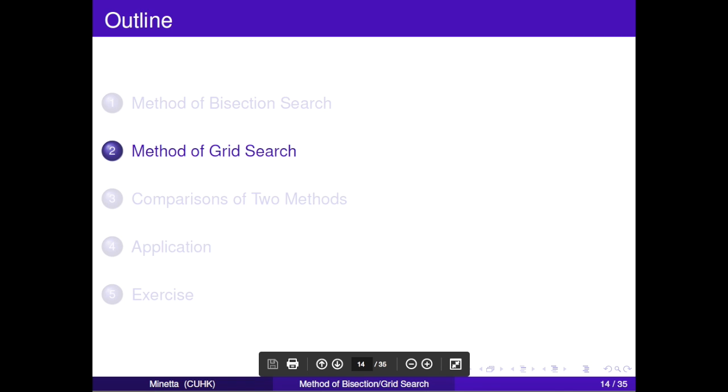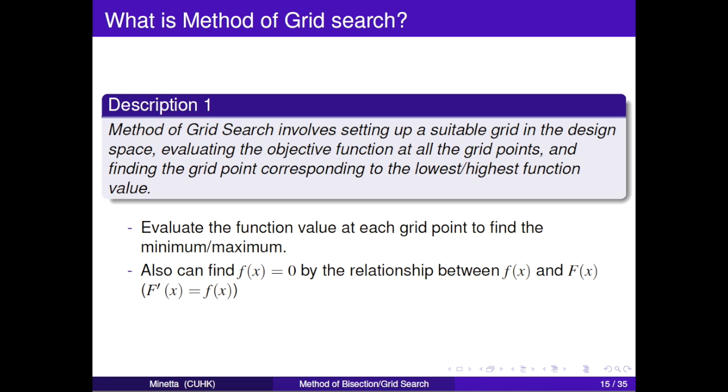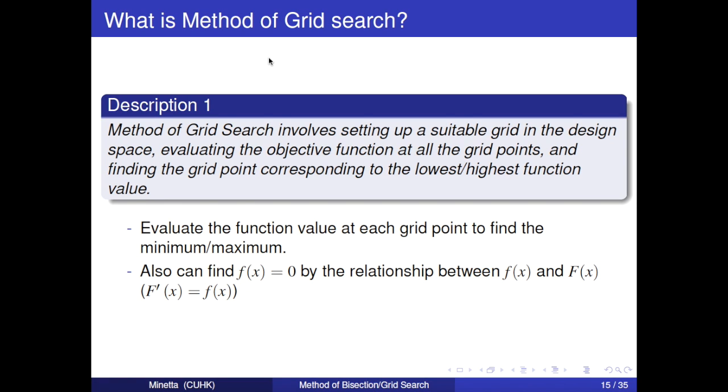Then, we go to the second part, method of grid search. Besides method of bisection search, method of grid search is also a useful method. It involves setting up a suitable grid in the design space, evaluating the objective function at all the grid points, and finding the grid point corresponding to the lowest or highest function value.